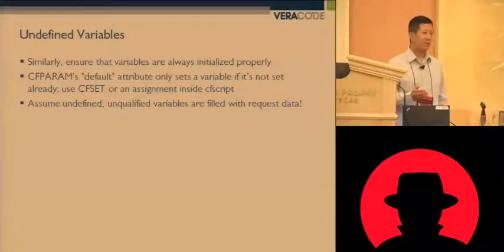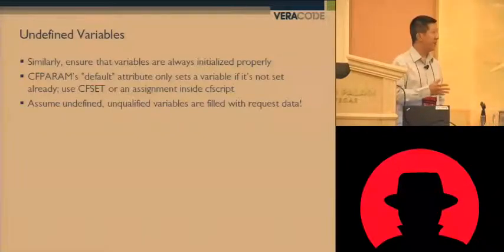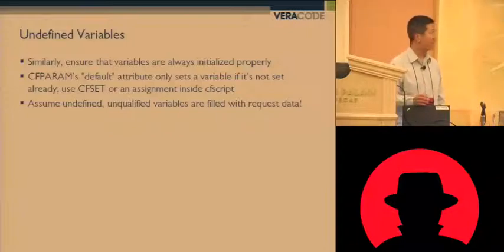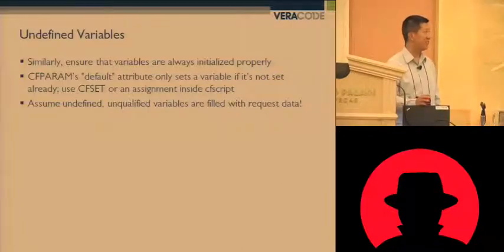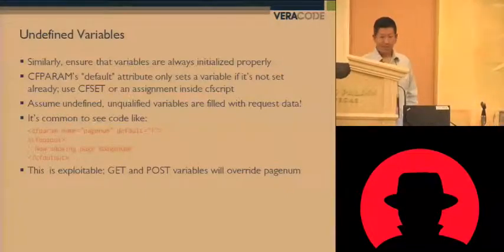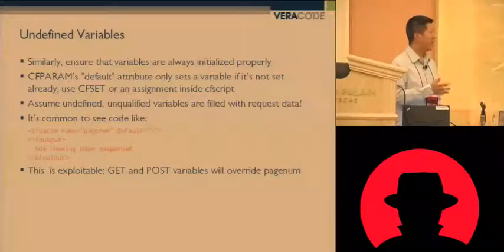Undefined variables are another case, sort of related to unscoped variables, but also related to the fact that there are similar tags in ColdFusion you might think do the same thing, but they don't. The two most often confused are cfparam and cfset. cfparam basically looks for a variable and if it's not already set, assigns a value. cfset will always make an assignment regardless of whether there's already a value there.